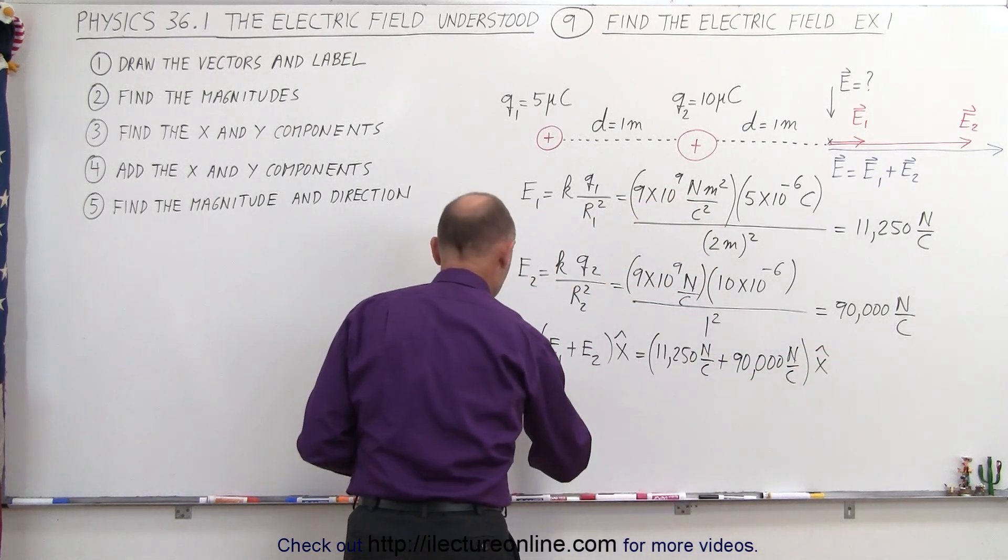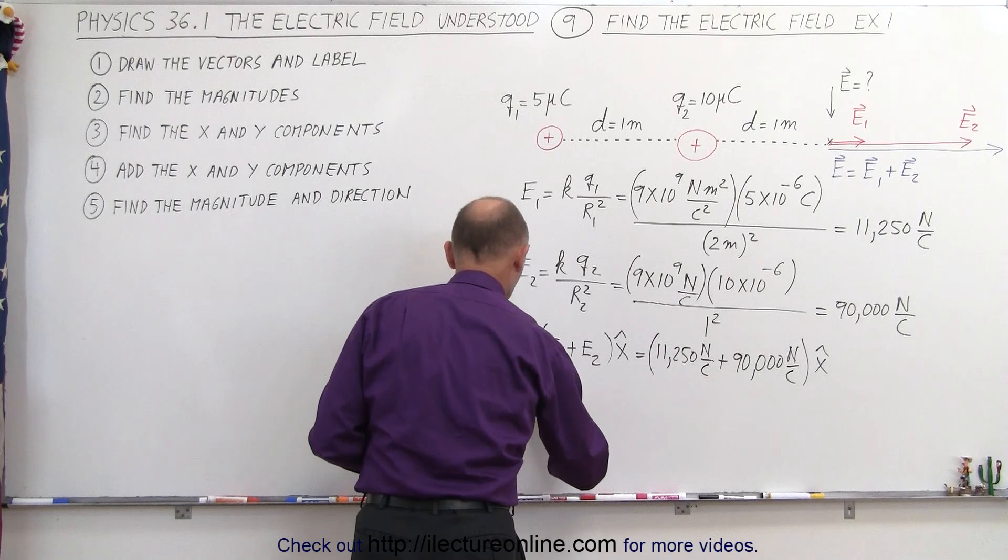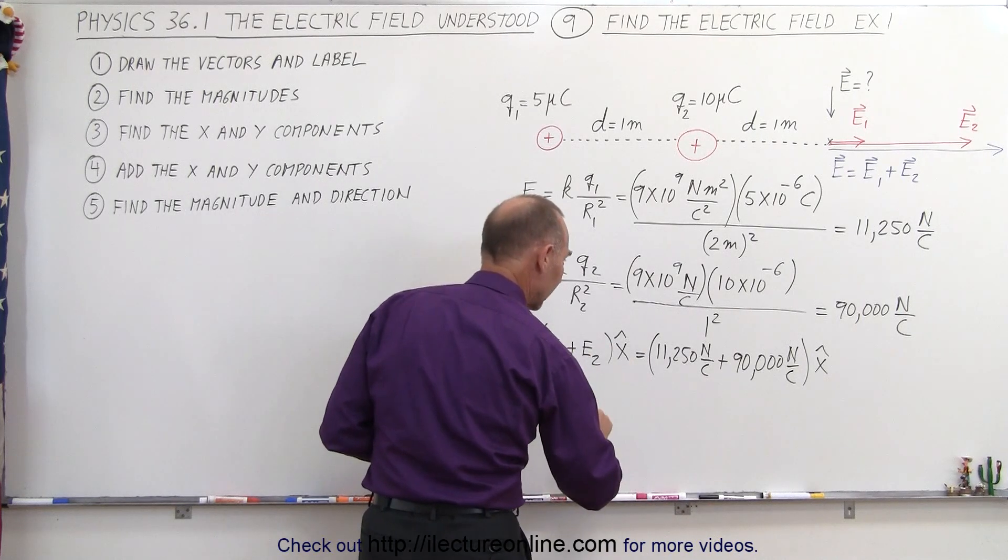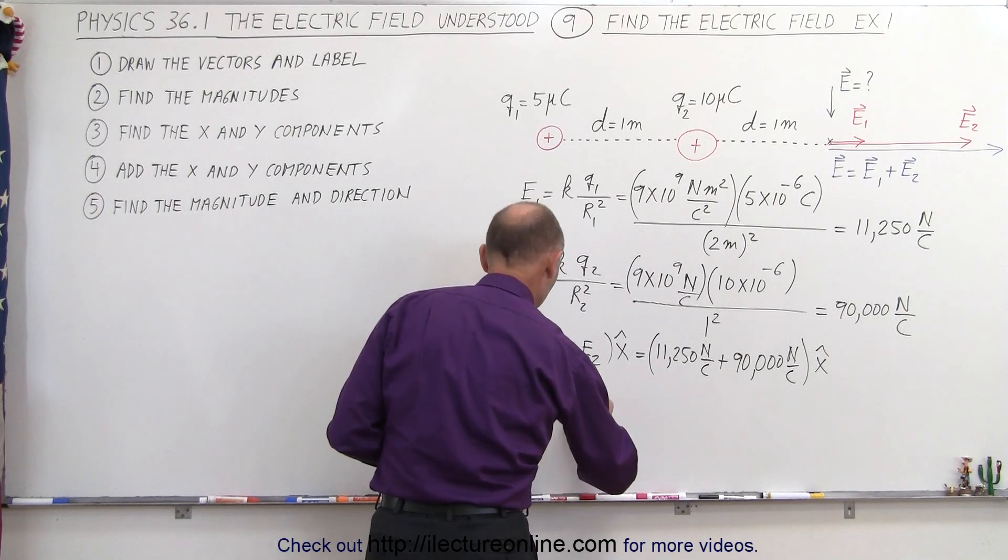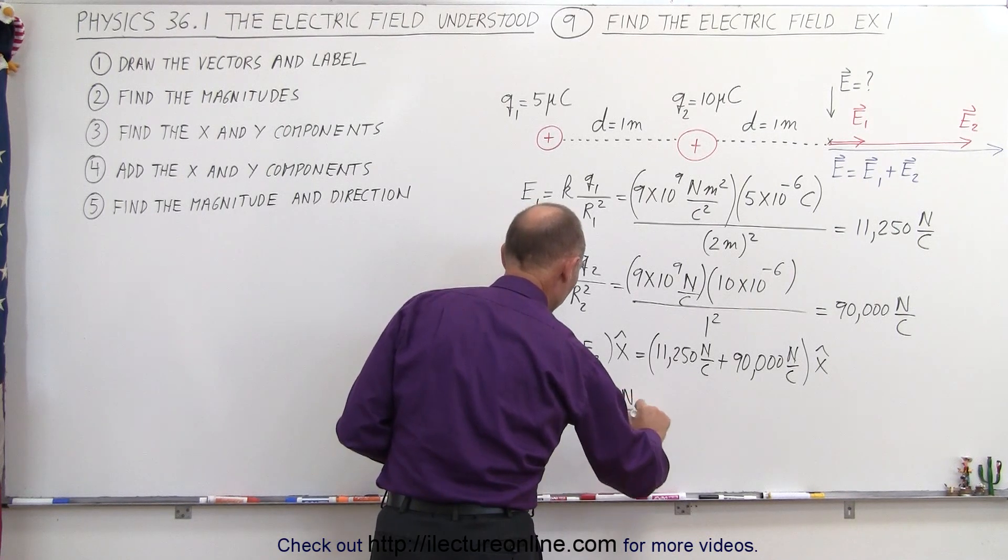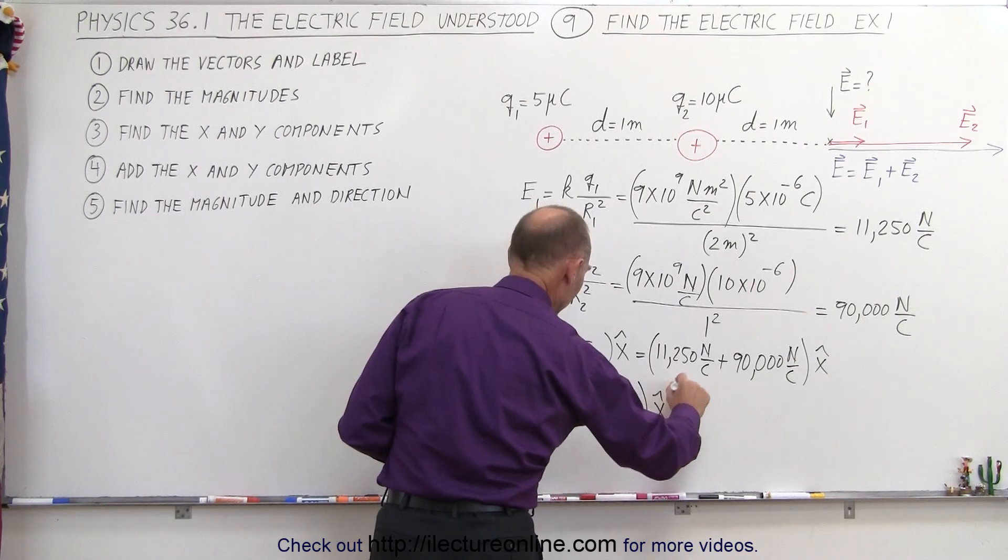And so finally the electric field at that location is equal to, add those together, that would be 101,250 newtons per coulomb in the x direction.